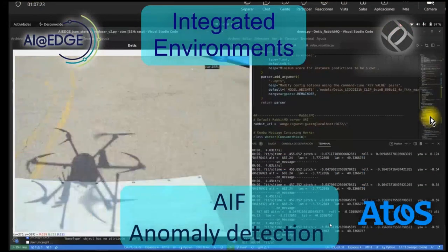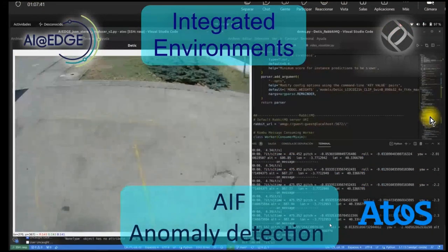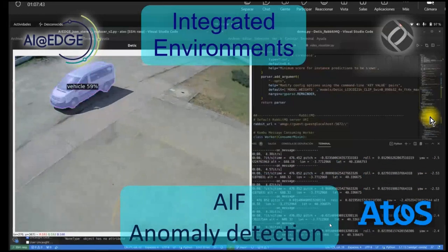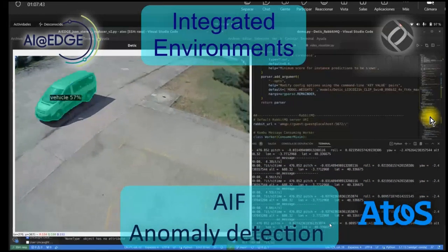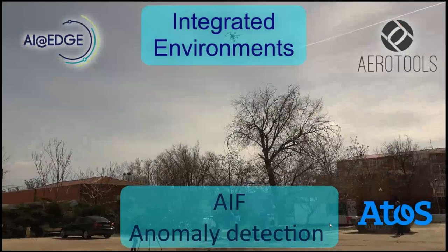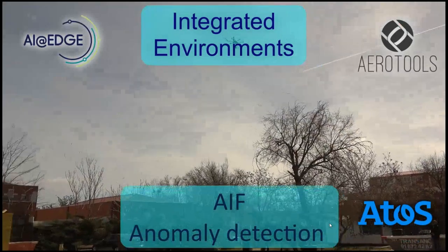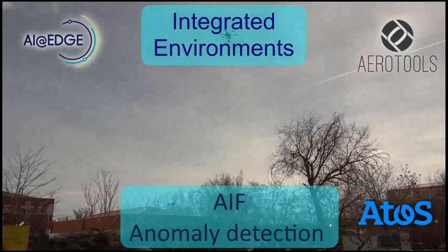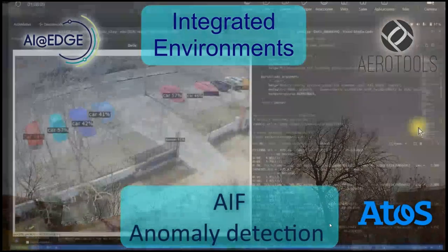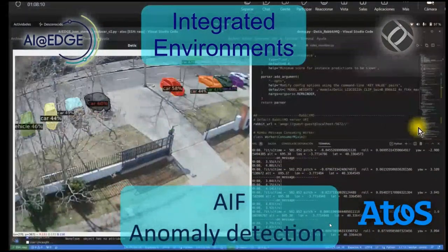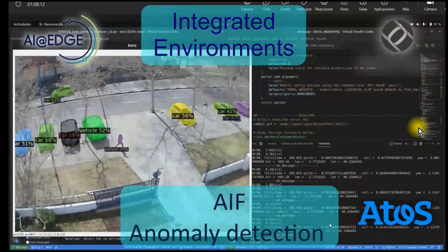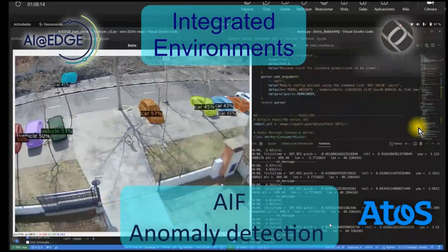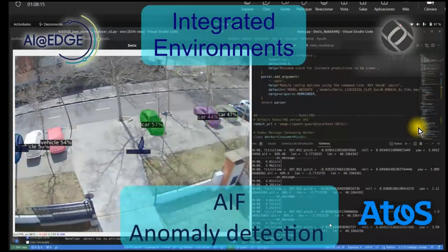This shows the drone starting to fly and taking images in the Phytonic laboratory, sending images for anomaly detection. The objects selected for detection were cars on one side and persons.